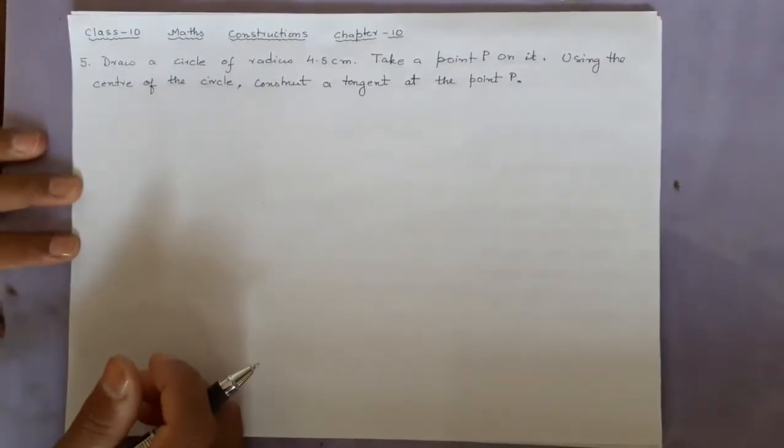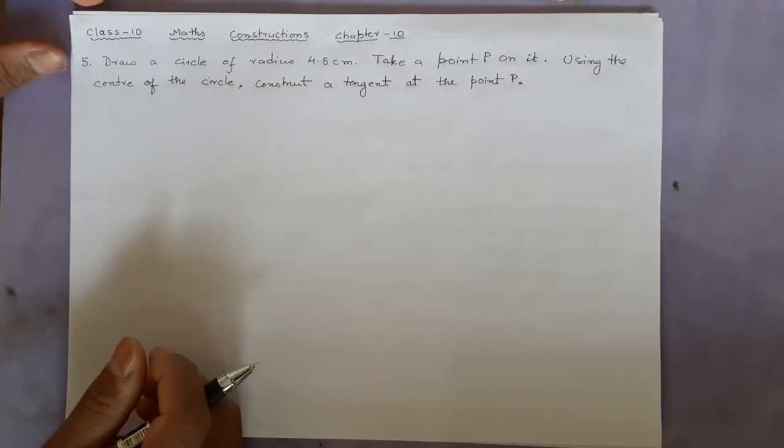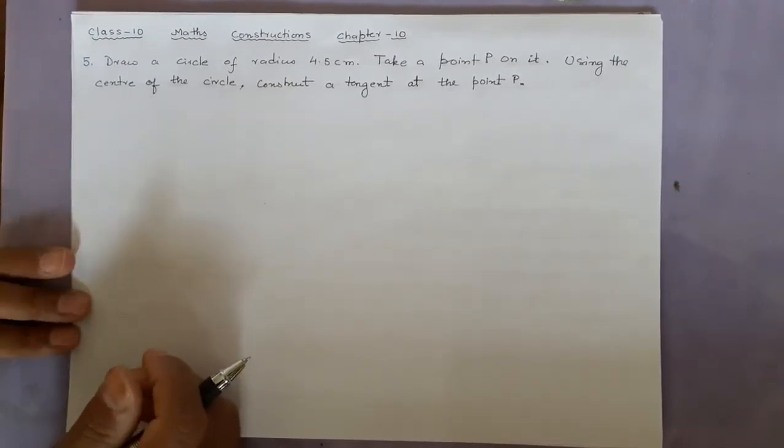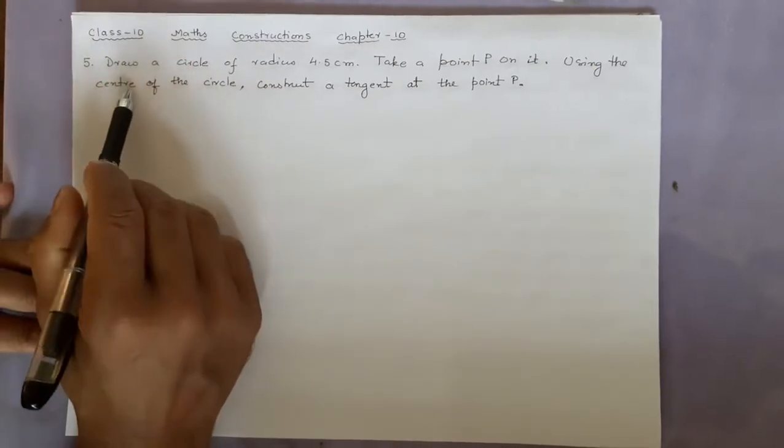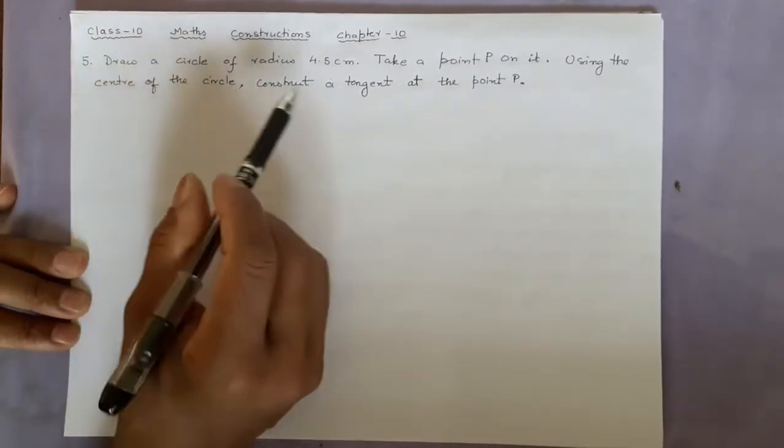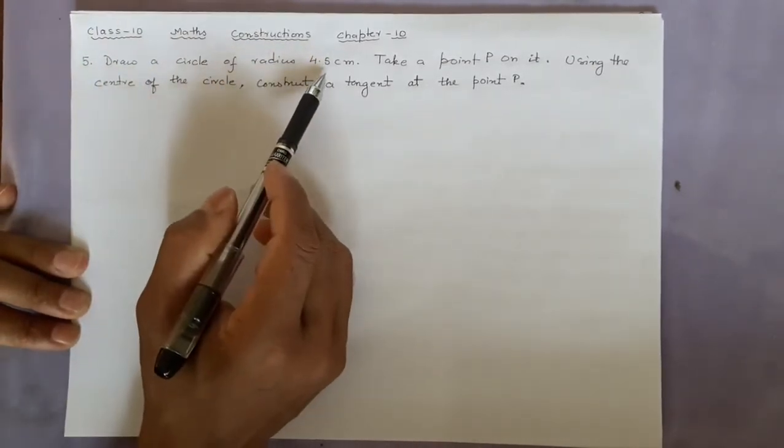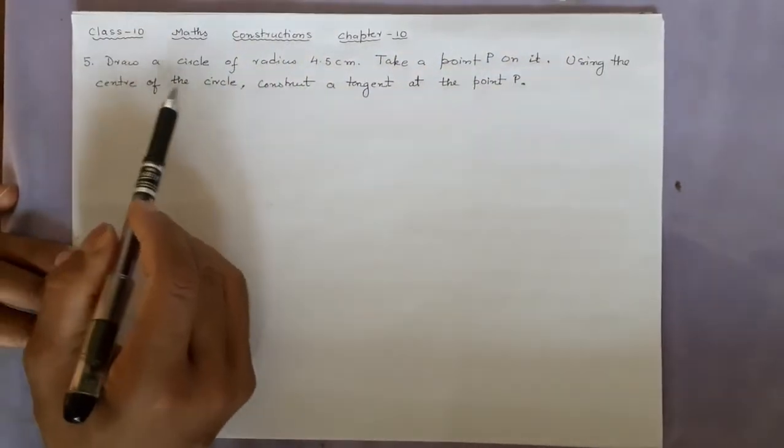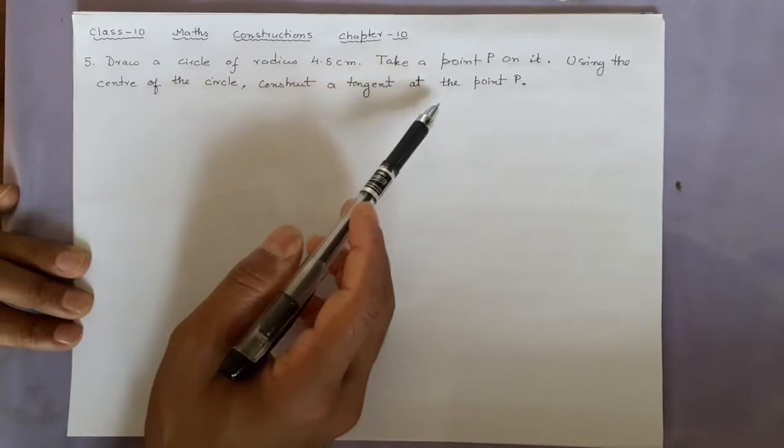Welcome back to Class 10, Chapter 10 Construction, question number 5. This question asks us to draw a circle of radius 4.5 centimeters, take a point P on it, and using the center of the circle, construct a tangent at point P.